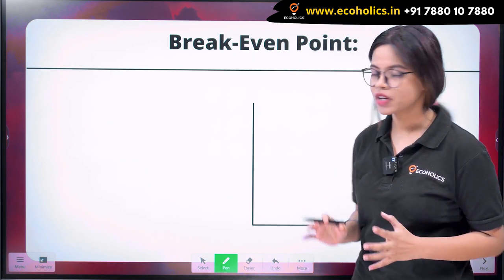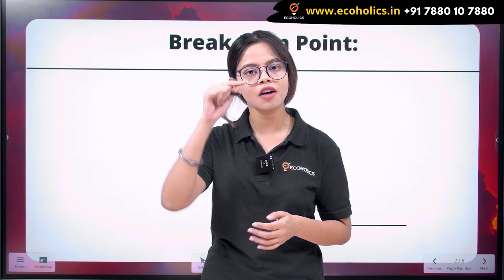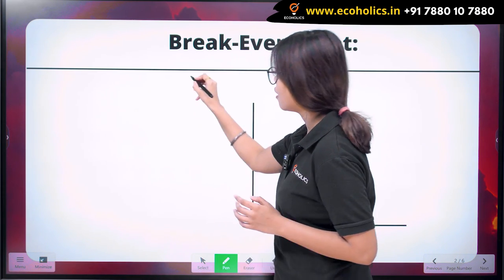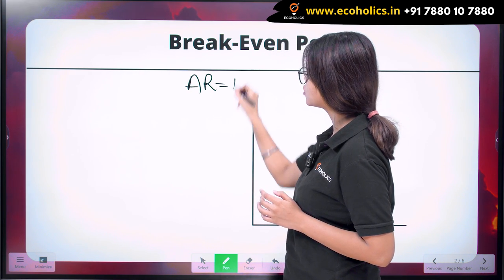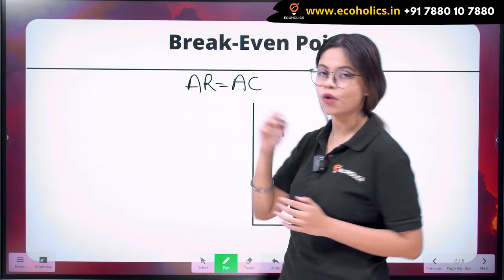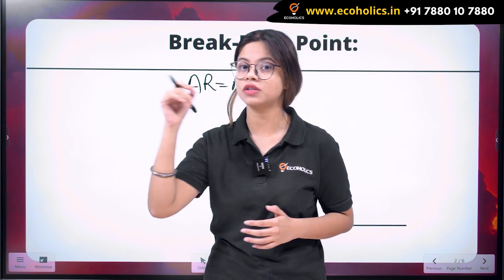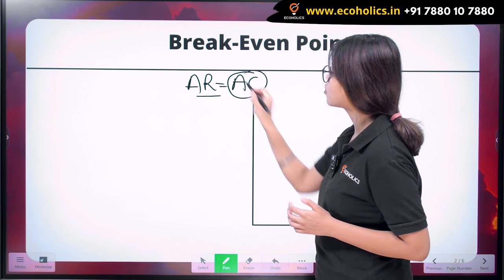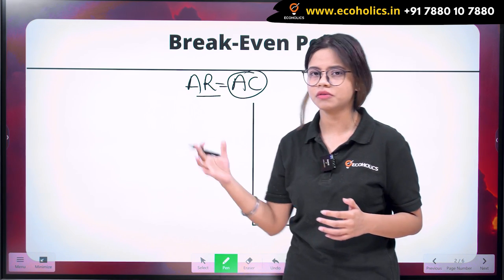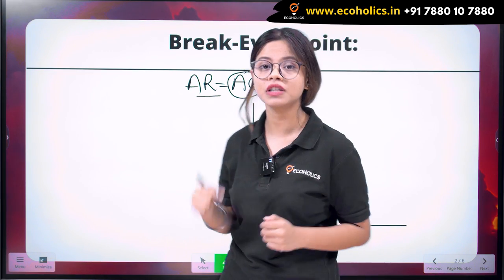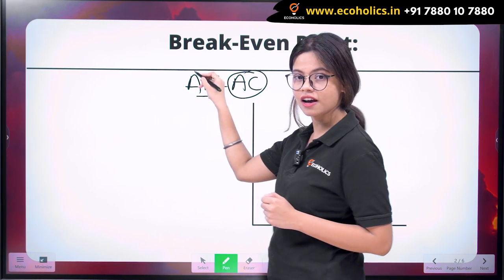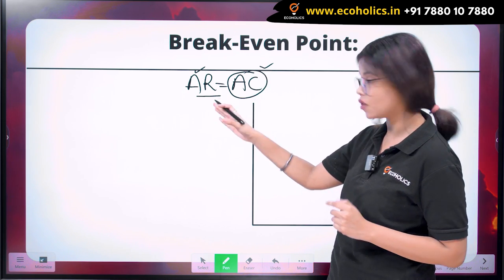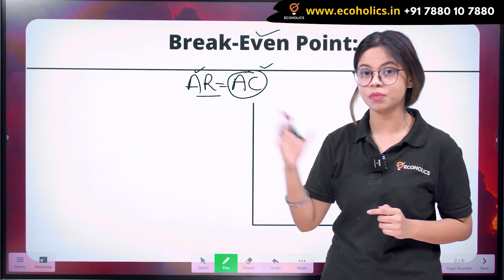So what does the break-even point tell you? There comes a point where a firm is only able to cover its average cost — that means AR is equal to AC. The break-even point is that point in a firm's production process where the firm is only able to cover the average cost and basically earns normal profit. Normal profit is earned when AR equals AC, and this point is known as the break-even point.